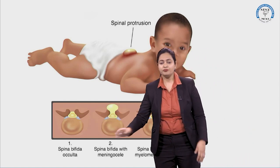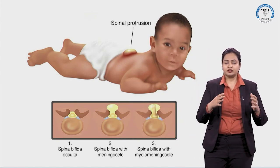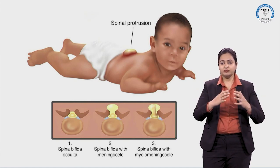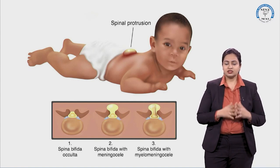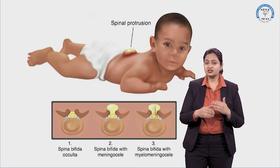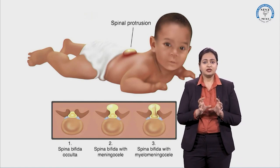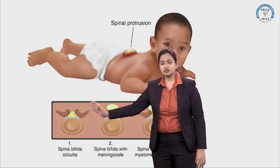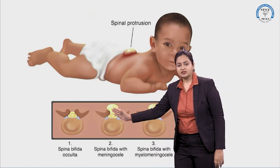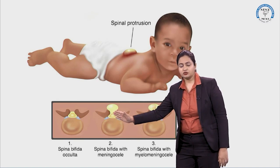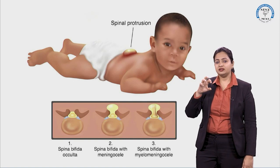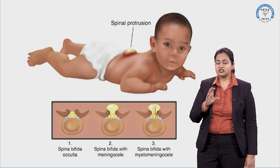In spina bifida occulta, there is a defect in the closure of the caudal neuropore along with a defect in the overlying vertebral column. However, it presents only with a depression on the outer side or simply a tuft of hairs — there is no cystic swelling. In meningocele, there is a defect in the posterior vertebral column through which the meninges come out, forming a cystic sac filled with cerebrospinal fluid.